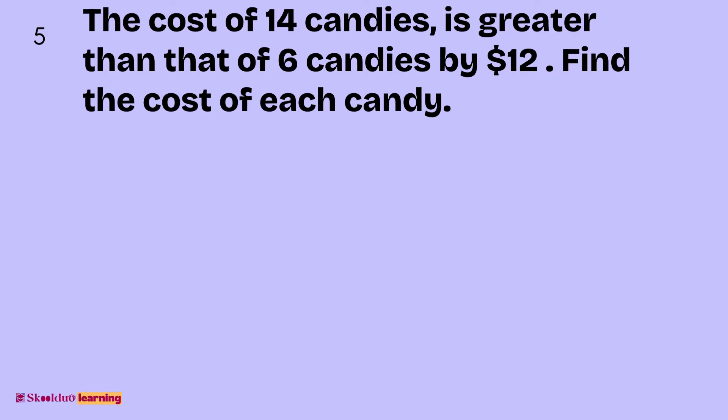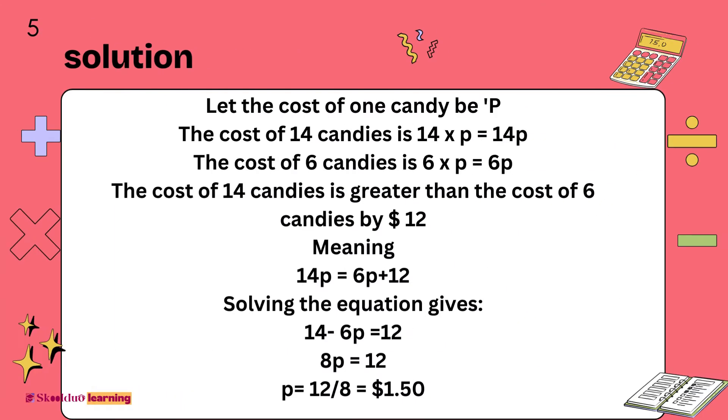Find the cost of each candy. Solution: Let the cost of 1 candy be P. The cost of 14 candies is 14 multiplied by P, which is 14P. The cost of 6 candies is 6 multiplied by P, which is 6P. Remember from the question, the cost of 14 candies is greater than the cost of 6 candies by $12. Meaning, 14P equals 6P plus 12. Solving the equation gives P equals $1.50.